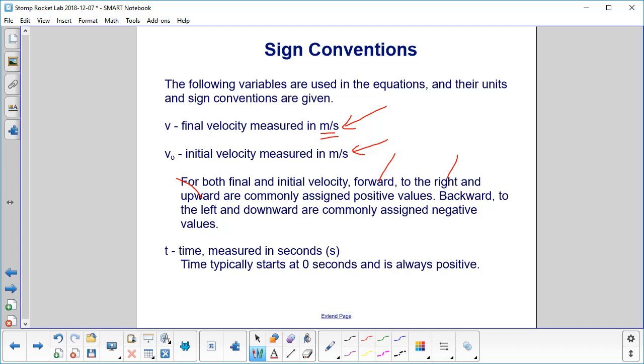Backward, to the left, and downward are commonly assigned negative values. You can, of course, switch them around for different problems, but right now let's stick with these conventions.